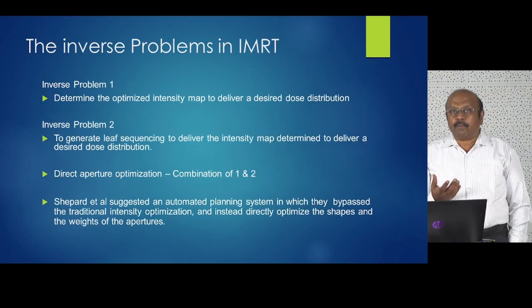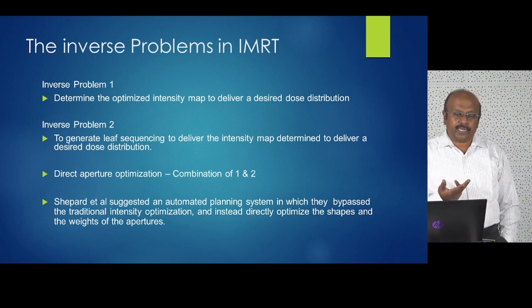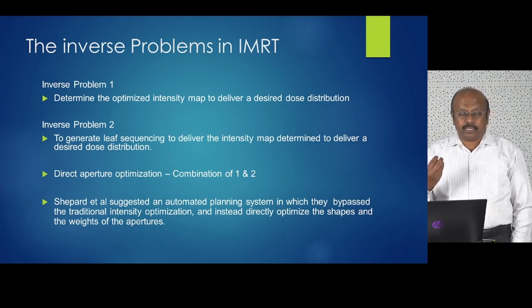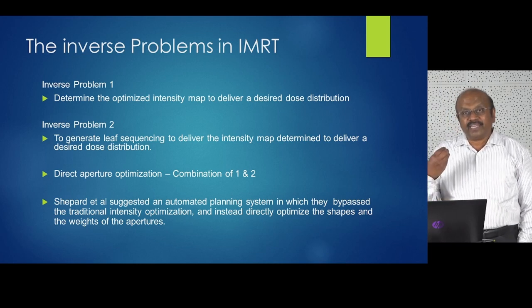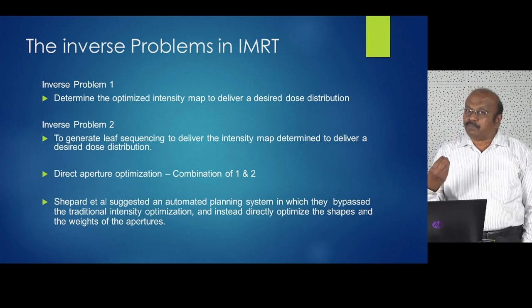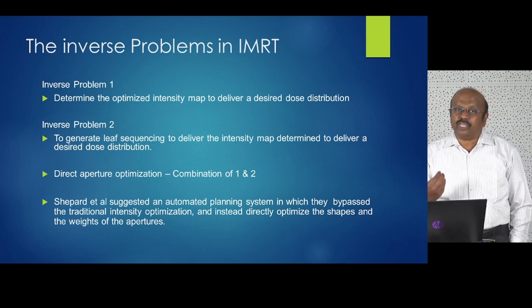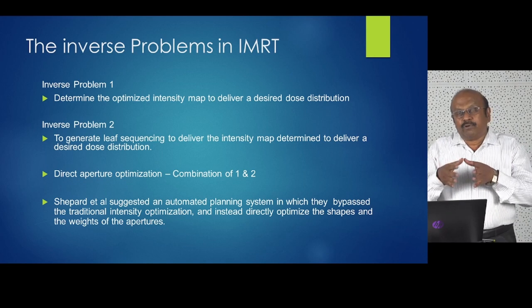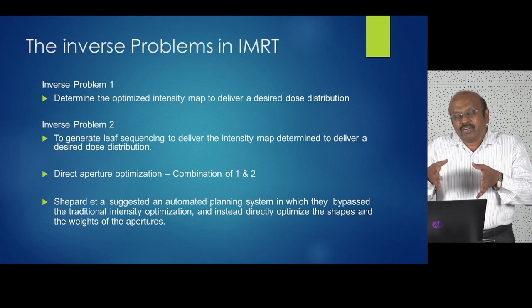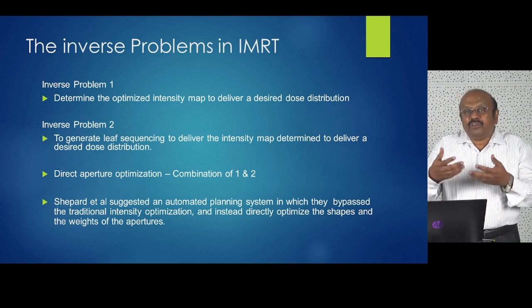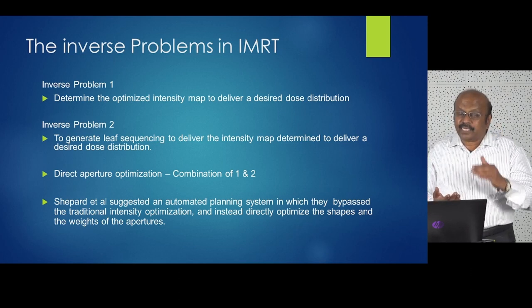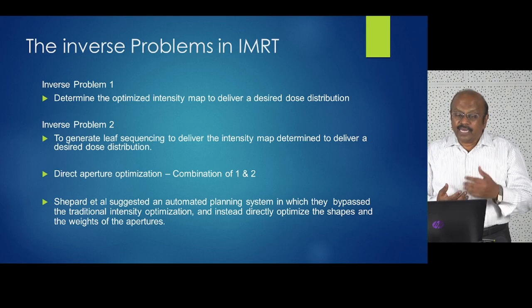There are actually two inverse problems involved in IMRT. The first is to determine the fluence map or intensity modulation depending on tumor location, size, and critical organ position — completely covering the tumor while minimizing dose to critical structures. The second inverse problem is: given that fluence, how must the leaves move to deliver it? You have to arrive at a leaf sequence. In most current planning systems, including VMAT, these two inverse problems are combined — called direct aperture optimization.